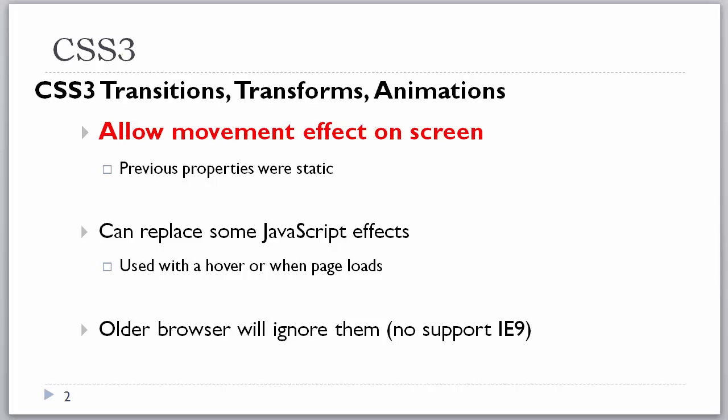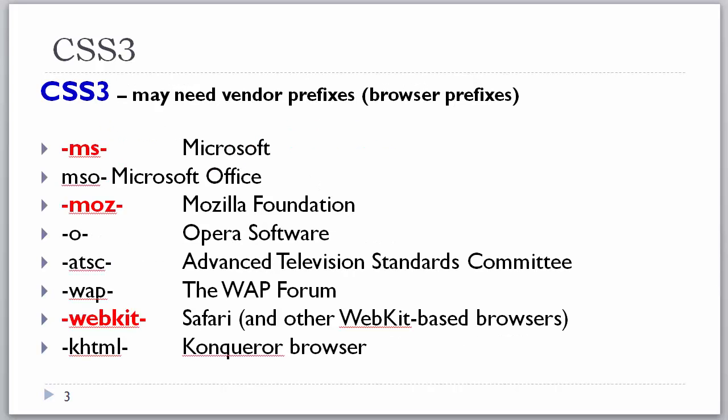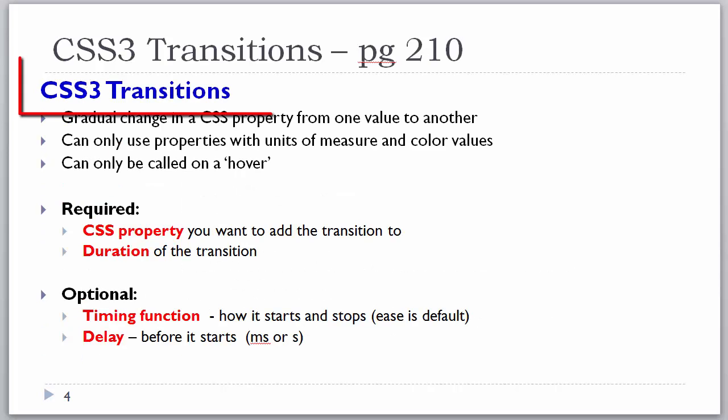The older browsers, such as Internet Explorer 9, will just ignore them, so nothing is broken. Most of these properties do need the vendor prefixes, sometimes called browser prefixes, as we see here. Let's look at CSS3 transitions.